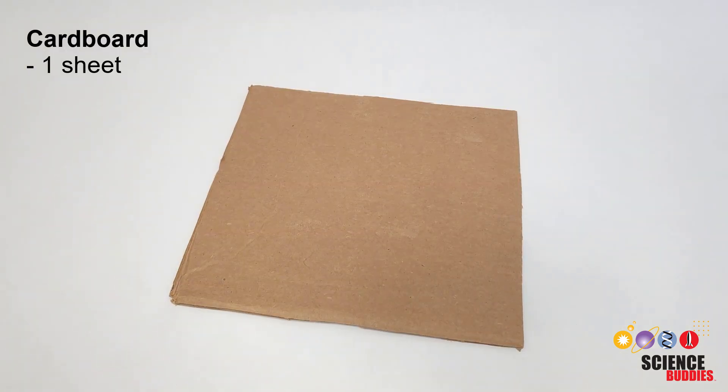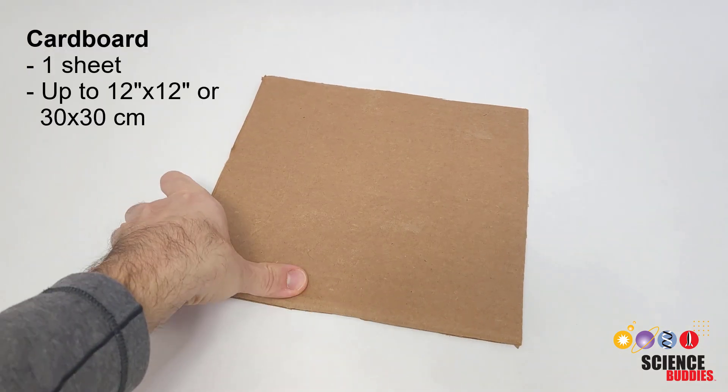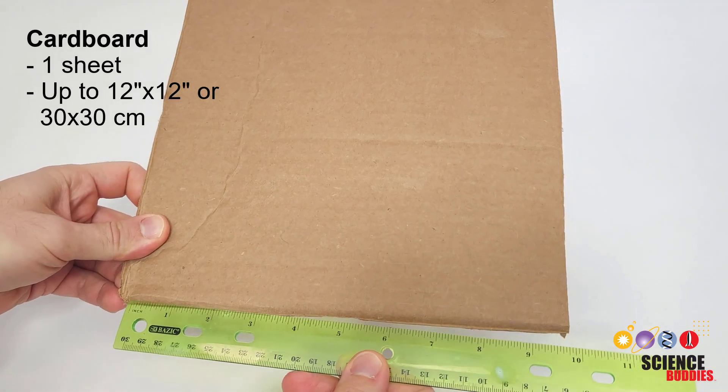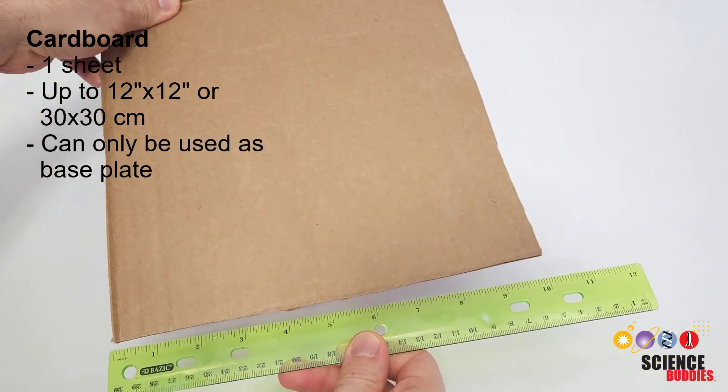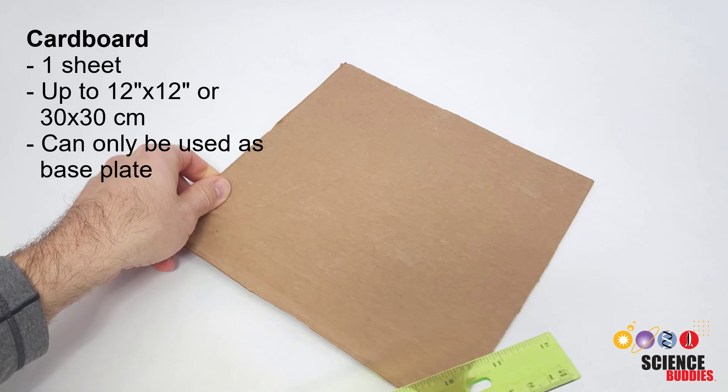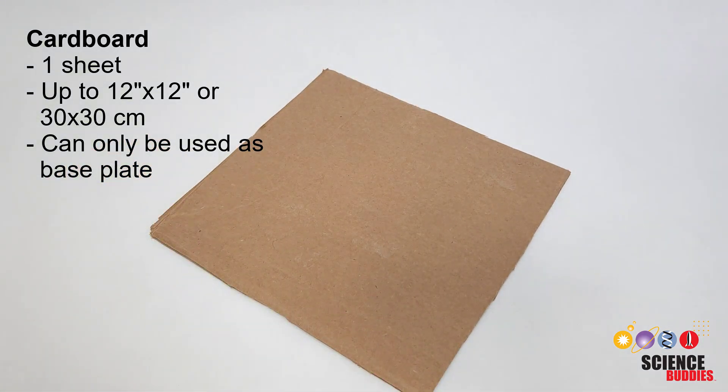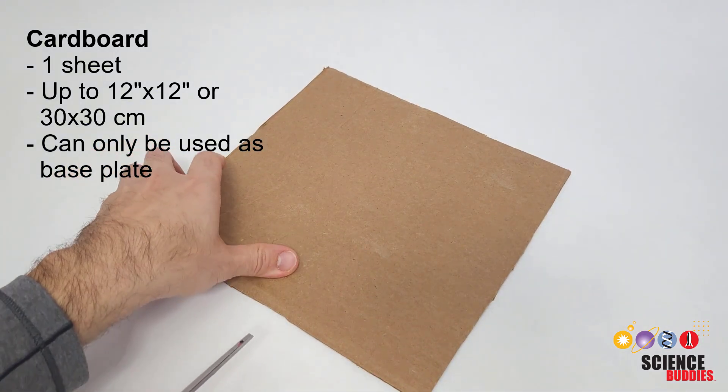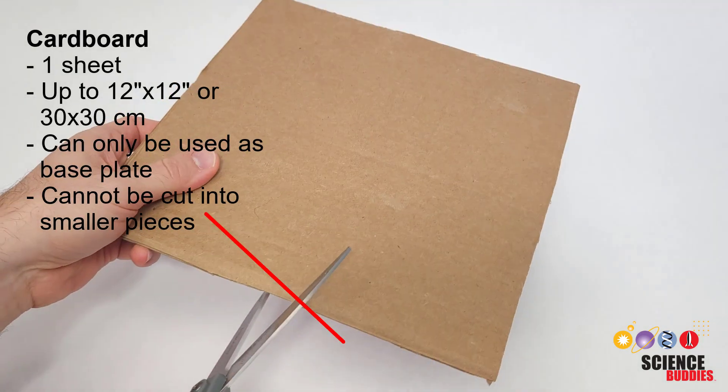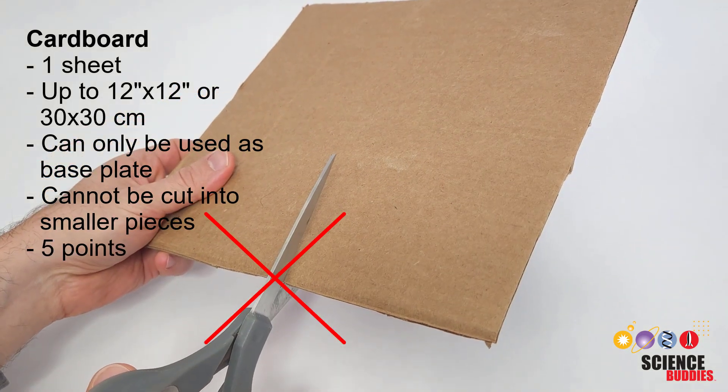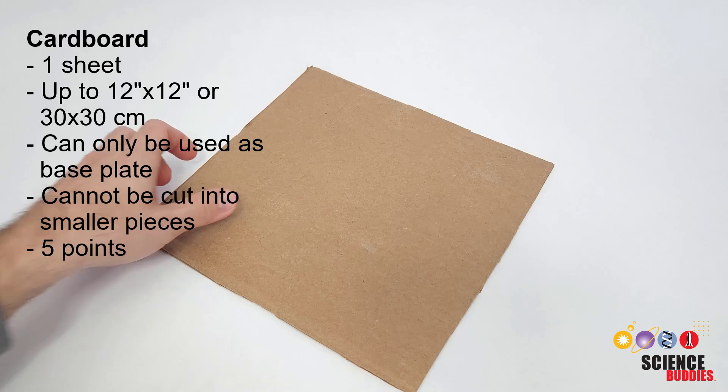You can use one sheet of cardboard up to 12 by 12 inches or 30 by 30 centimeters. This cardboard can only be used as a horizontal base plate to support your device and make it easier to pick up and move around. It cannot be cut into smaller pieces. The sheet of cardboard has a cost of five points.